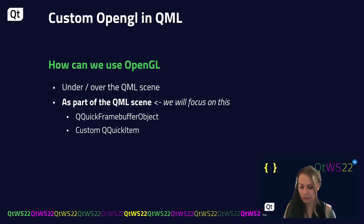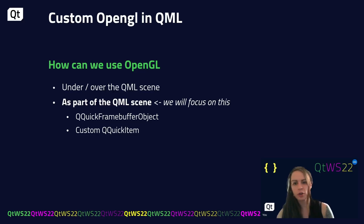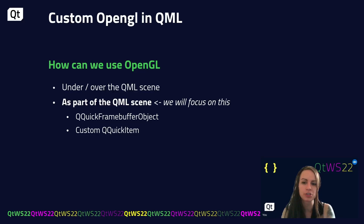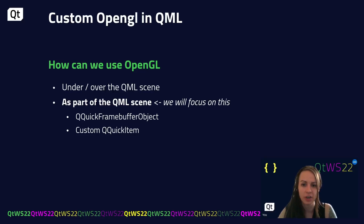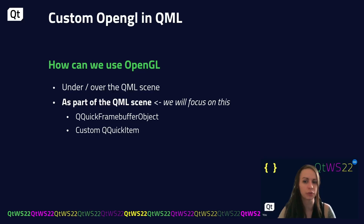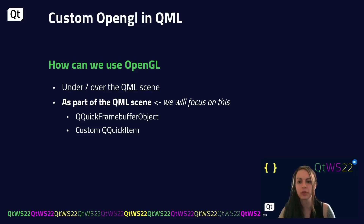If you want to do that, you can do something like a QML scene overlay or underlay, but we will focus on how to interface our own OpenGL rendering code directly as part of the QML scene. For that we can use QQuickFrameBufferObject as a utility Qt-provided class, or we can implement our own. We will focus on both of these points.